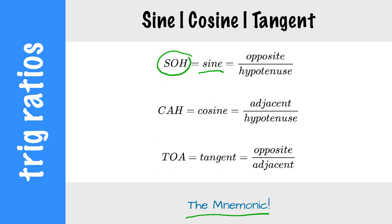We're talking about the trigonometric ratios. And remember, a ratio is a comparison. So sine is the comparison of the opposite side to the hypotenuse.